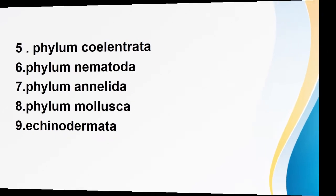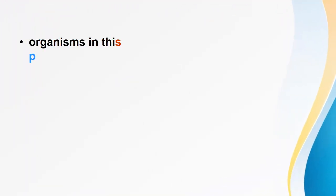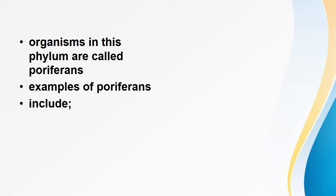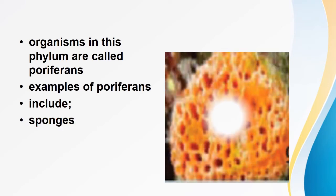Let us start with Phylum Porifera. Organisms in this phylum are called Poriferans. Examples of Poriferans include sponges — you can see a sponge here. After observing it, we shall state the characteristics.